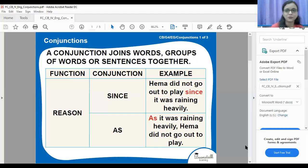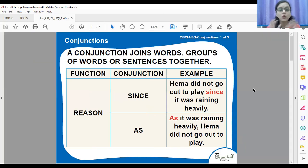Now, we will know about some more conjunctions and their functions and usage. Look at the screen. A conjunction joins words, group of words or sentences together. Let's see different kinds of conjunctions and their functions. Since and as are used to give reasons. Look at the examples.